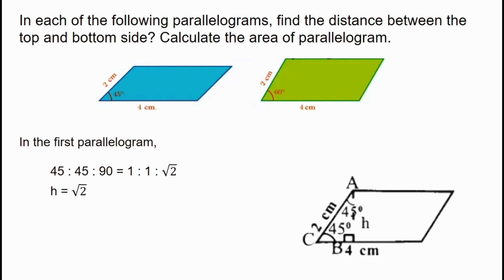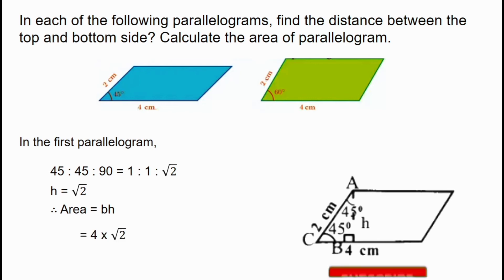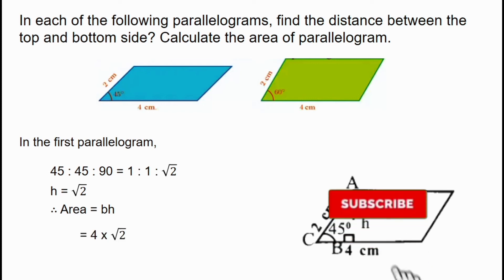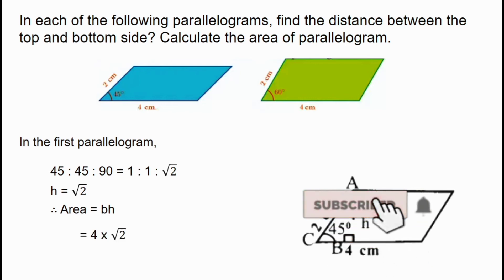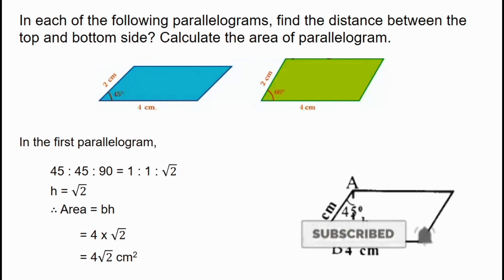Now let's calculate the area of the first parallelogram. The area is base into height, that is B × H. If the base is 4 cm and the height is √2, then we substitute 4 into √2. That gives us 4√2 cm².